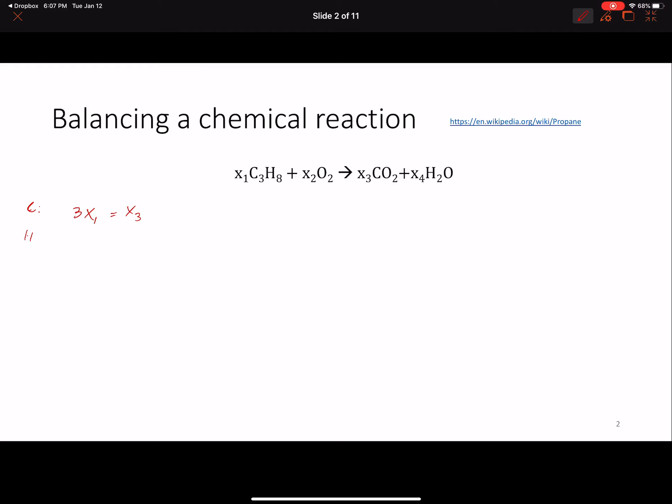Repeat this for hydrogen, and you'll find out that 8X1, because we have eight hydrogen atoms here, should be equal to 2X4. The reason here is because we have two hydrogen atoms in that molecule. Let's do this also for oxygen. We have that 2X2 will be equal to 2X3 plus X4. This oxygen atom here appears by itself.